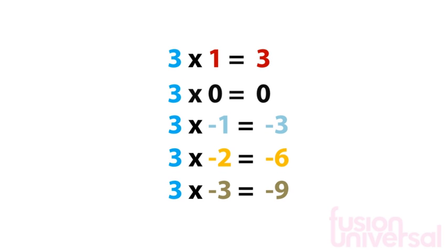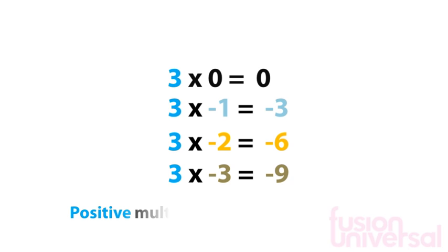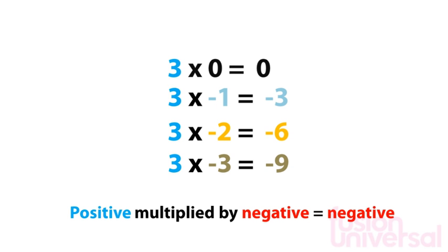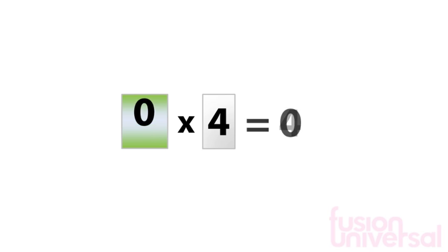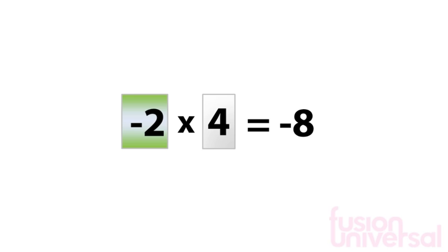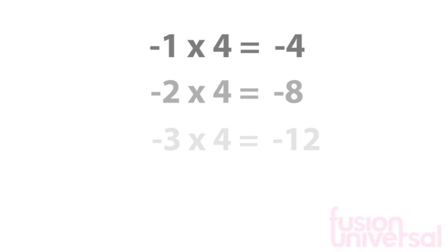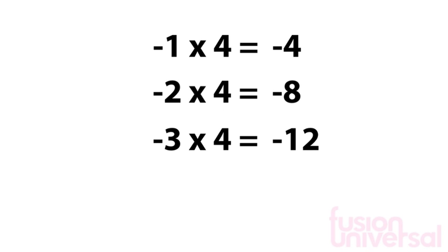We can do the same thing by reducing the first number we are multiplying by. This time, each reduction reduces the product by 4. Again, we can start to build a negative times table. From this times table, we can see that a negative multiplied by a positive gives a negative product.